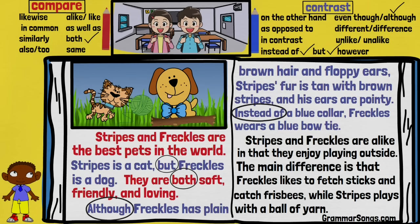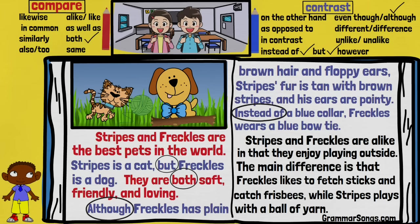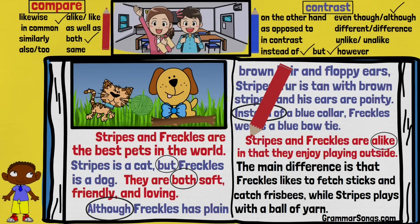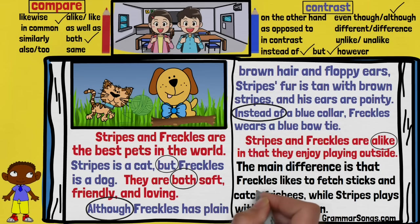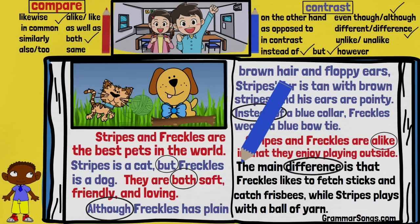'Stripes and Freckles are alike in that they enjoy playing outside.' The word 'alike' means same — this sentence compares Stripes and Freckles; they both like to play outside. 'The main difference is that Freckles likes to fetch sticks and catch frisbees, while Stripes plays with a ball of yarn.' The word 'difference' is a signal word for contrast. Freckles likes to fetch sticks and catch frisbees, while Stripes plays with a ball of yarn.